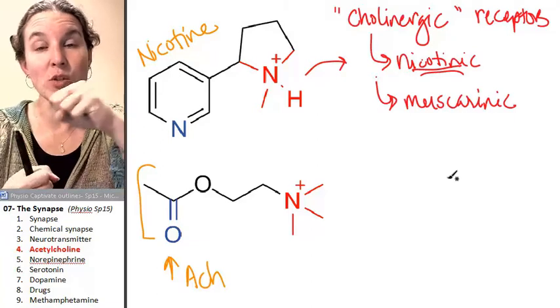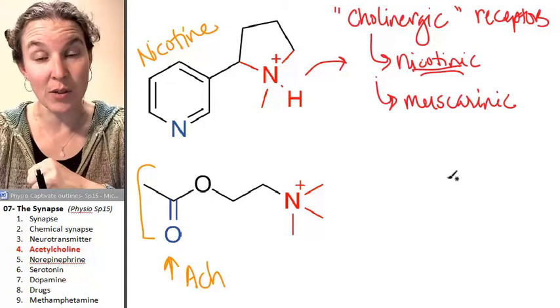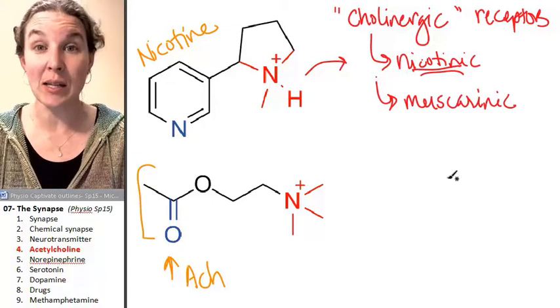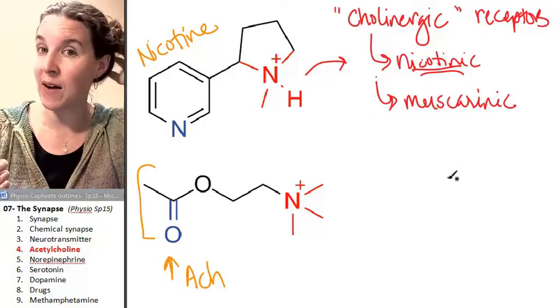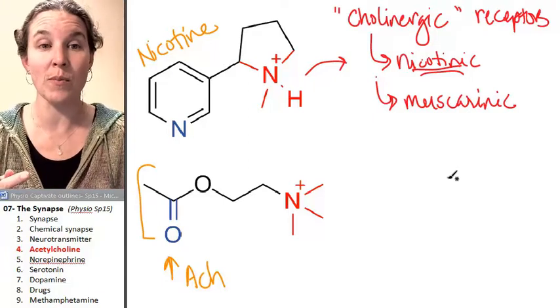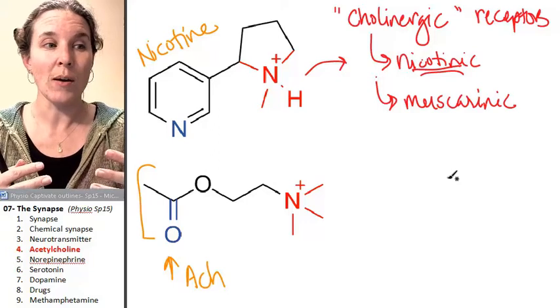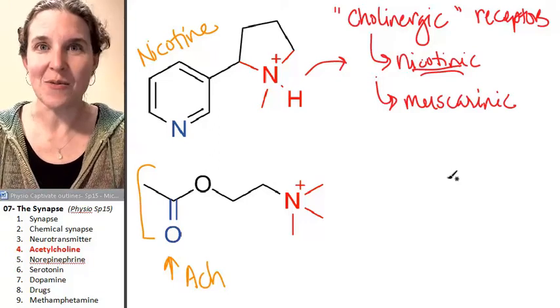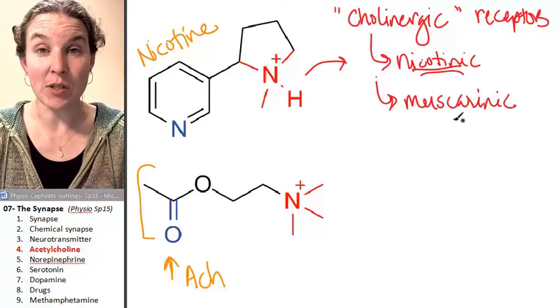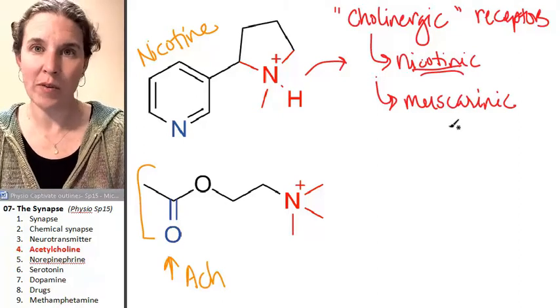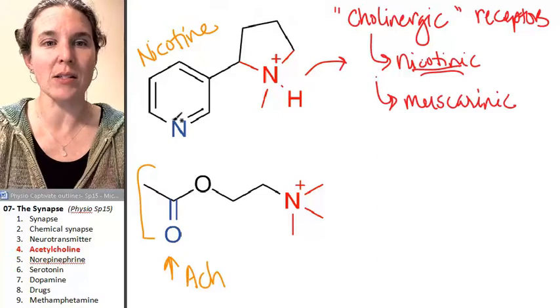When acetylcholine binds to a muscarinic receptor, it's going to stimulate a second messenger cascade. We're going to open some G proteins and we're going to have a slower, different response. Where we have nicotinic and muscarinic receptors, that's actually a form of fine-tuning the effects of acetylcholine.